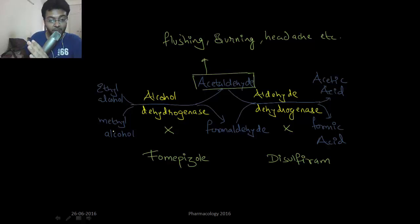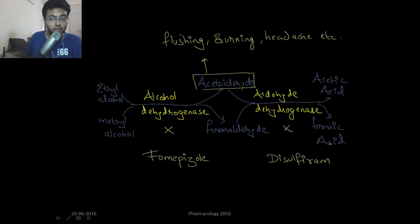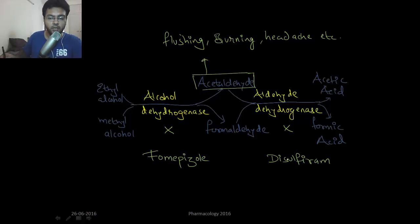Now if you have the idea to drink methyl alcohol, methyl alcohol will be converted into formaldehyde by alcohol dehydrogenase, and formaldehyde will be converted into formic acid, which can produce ocular toxicity — a snowstorm of vision.